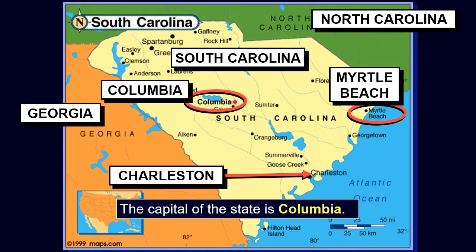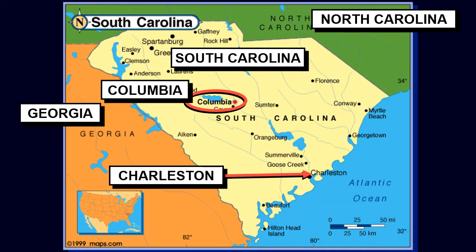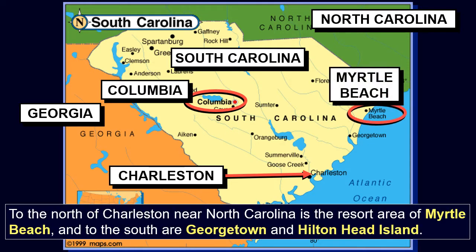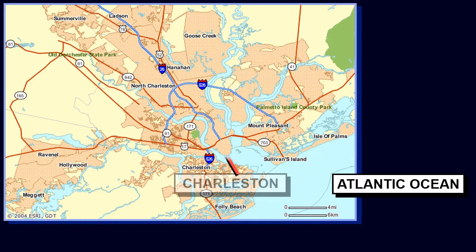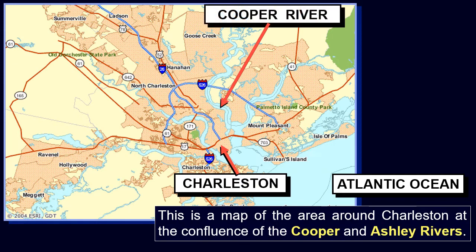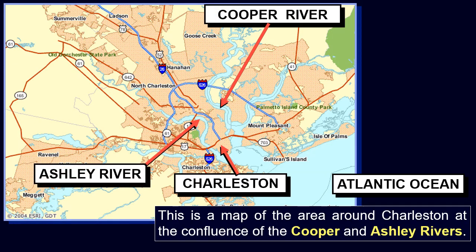The capital of the state is Columbia. To the north of Charleston near North Carolina is the resort area of Myrtle Beach, and to the south are Georgetown and Hilton Head Island. Charleston is the largest city and county seat of Charleston County. This is a map of the area around Charleston, at the confluence of the Cooper and Ashley Rivers.